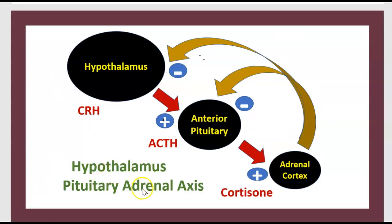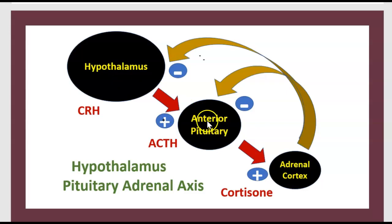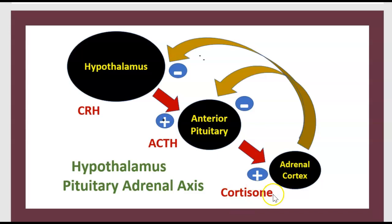The hypothalamic-pituitary-adrenal axis involves the hypothalamus, anterior pituitary, and adrenal cortex. The hypothalamus stimulates the anterior pituitary via CRH, and the anterior pituitary stimulates the adrenal cortex via ACTH, resulting in cortisol production. When cortisol levels rise, it sends negative feedback to both the anterior pituitary and the hypothalamus.